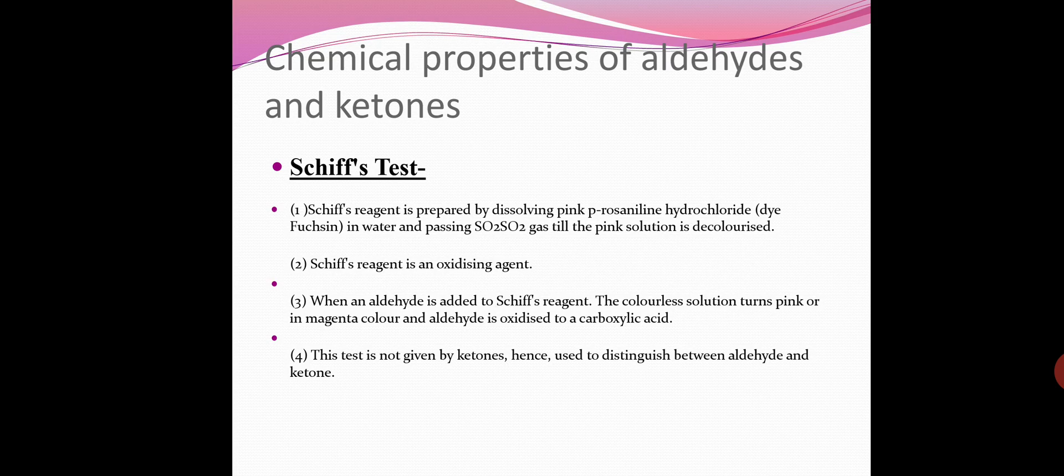First is Schiff's test. Schiff's reagent is a colorless solution obtained by passing SO2 gas through a solution of para-rosaniline hydrochloride. When aldehyde is added to Schiff's reagent, the colorless solution turns pink or magenta color and aldehyde oxidizes to carboxylic acid. This test is not given by ketones and hence used to distinguish between aldehydes and ketones.